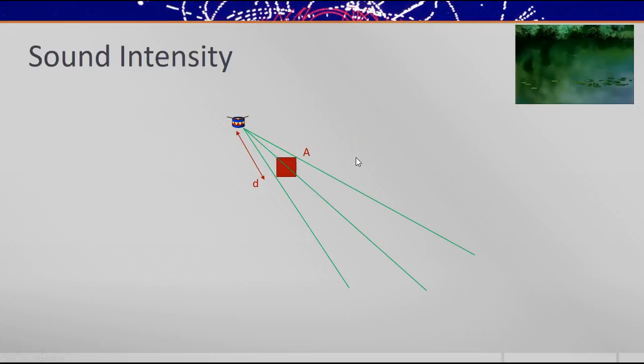If you double the distance, what's going to happen to that area? The area is going to be four times greater. So twice the distance will have four times the area, and three times the distance would therefore have nine times the area. So the area that spreads out is proportional to the distance squared.